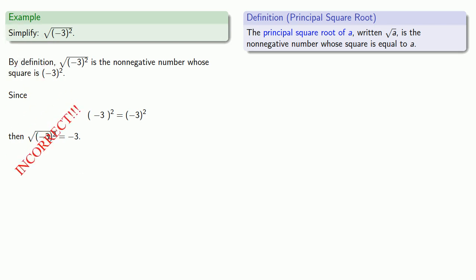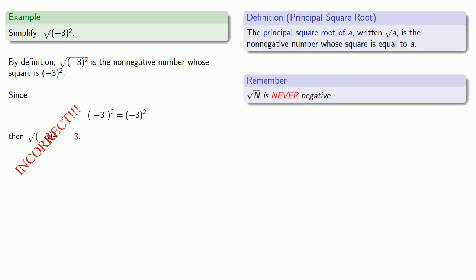Mathematicians aren't subtle, but we do like to follow the rules, and the rules say that our principal square root has to be a non-negative number. It's vitally important to remember that when we write this symbol, the principal square root of n is never negative.